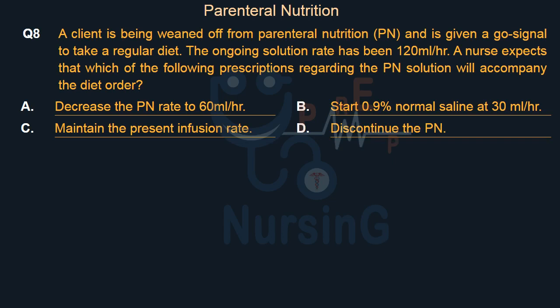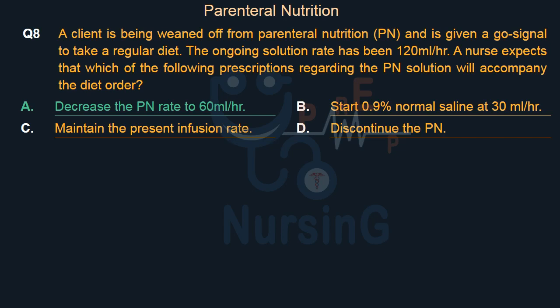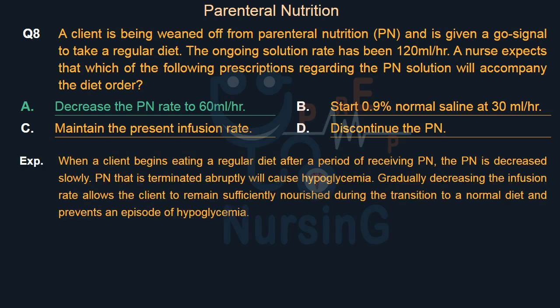Right answer is Option A: Decrease the PN rate to 60 ml per hour. When a client begins eating a regular diet after a period of receiving PN, the PN is decreased slowly. PN that is terminated abruptly will cause hypoglycemia. Gradually decreasing the infusion rate allows the client to remain sufficiently nourished during the transition to a normal diet and prevents an episode of hypoglycemia.